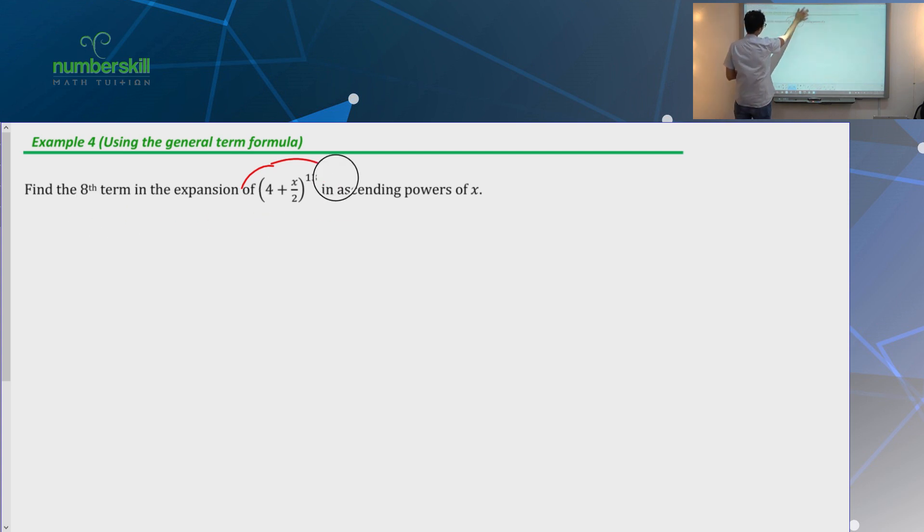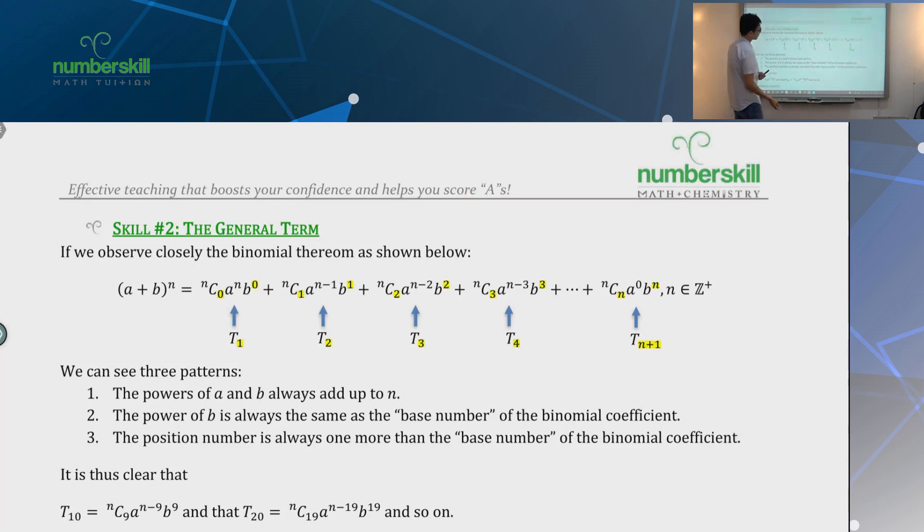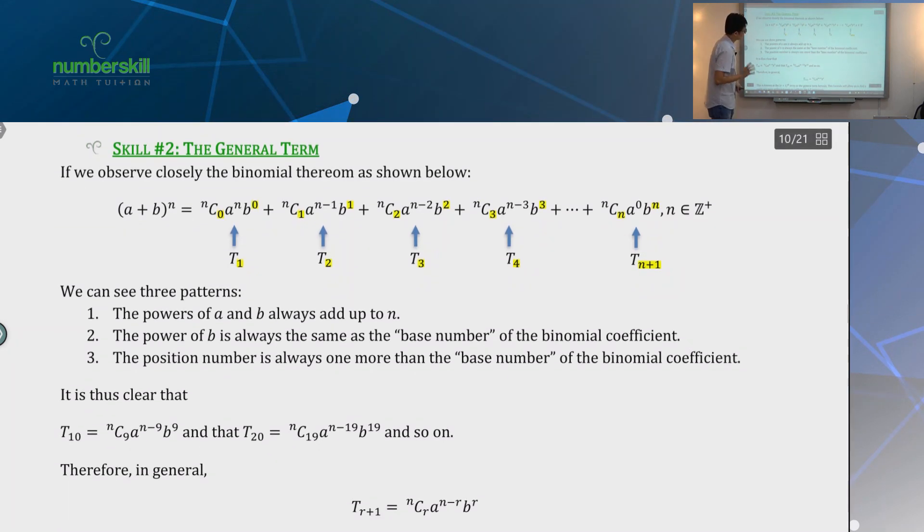So that's what we call the general term formula. So again, you probably guessed that, well, another formula. Yes, another formula. But this other formula turns out not that hard. Because, let me just go through quickly. You already know this formula very well, right? This is the binomial theorem. As we work, we're using all this well. Nc0, Nc1, power reduce one, power add one, blah blah blah.